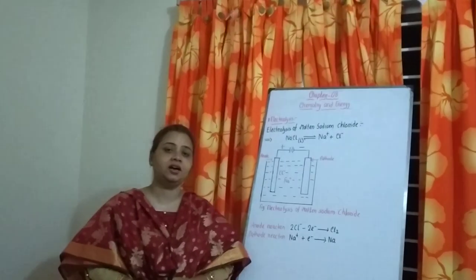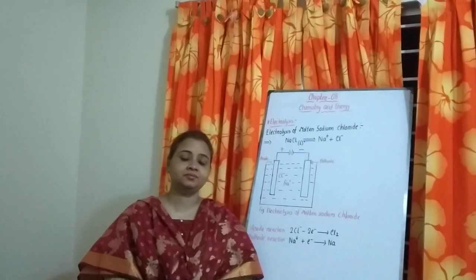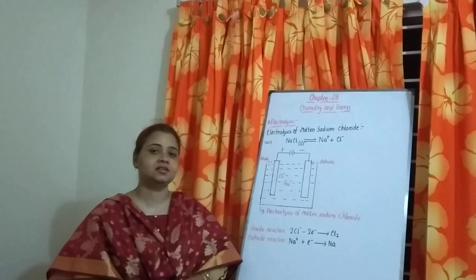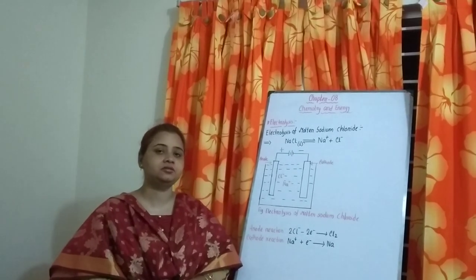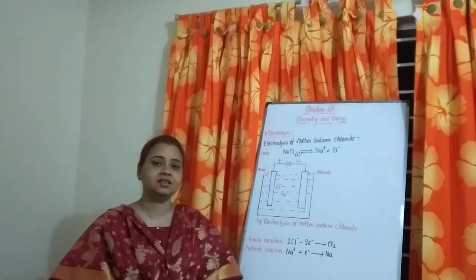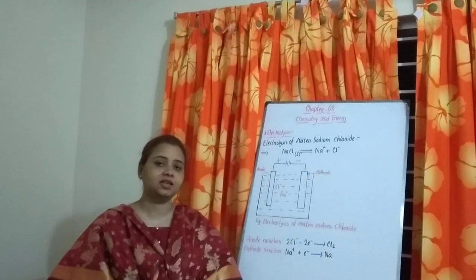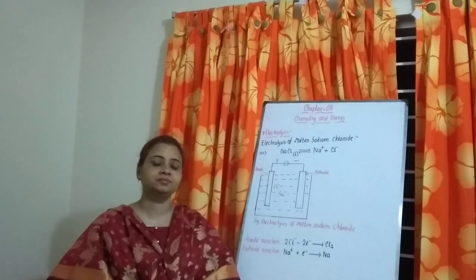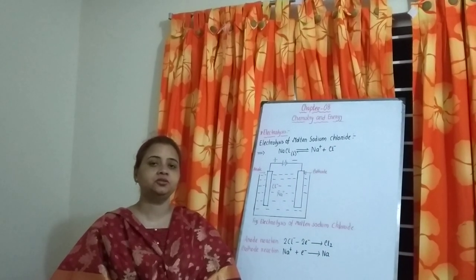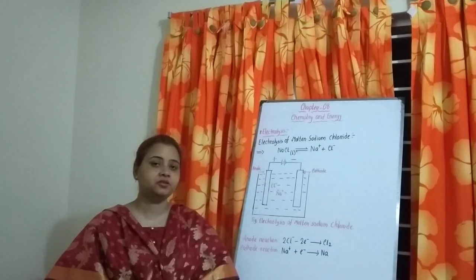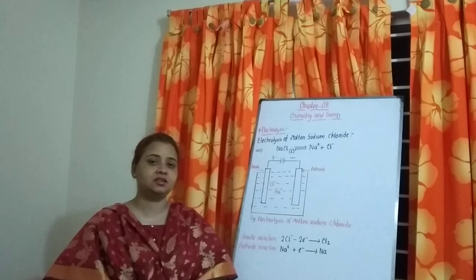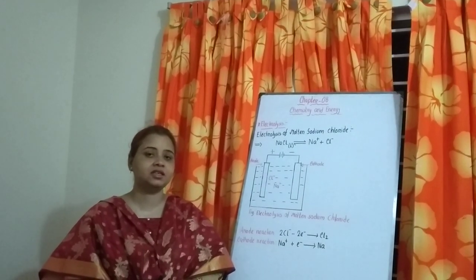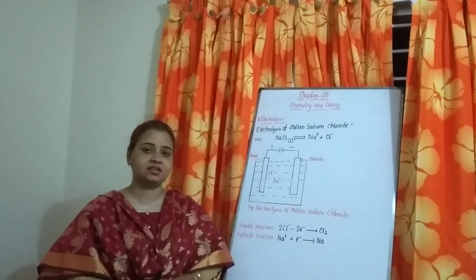Dear students, how are you? At the last class, I taught you electrochemical cell — that means galvanic cell, dry cell. And I told you that there are two types of cell: number one is electrochemical and number two is electrolytic cell.